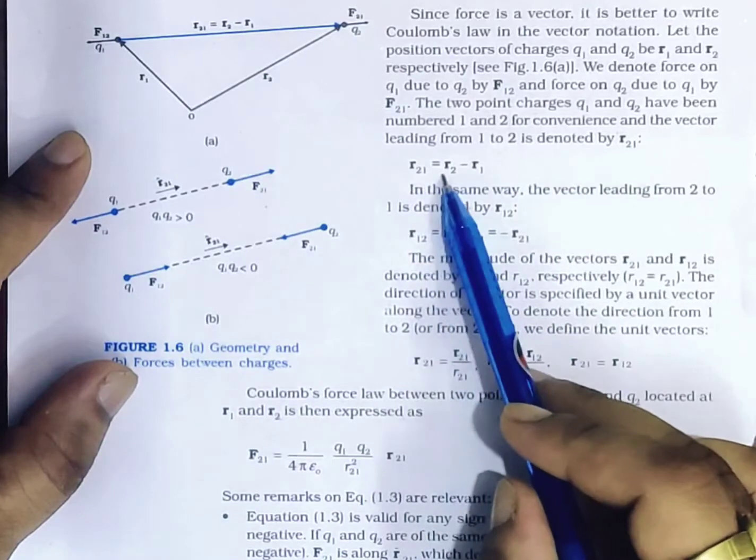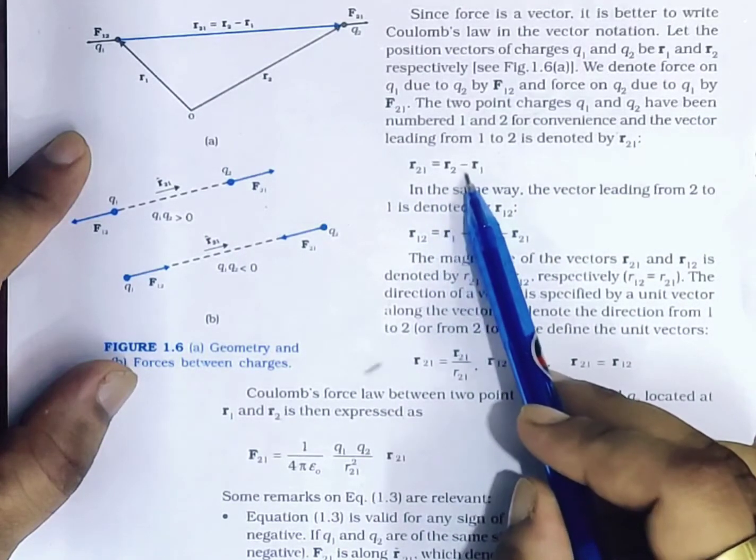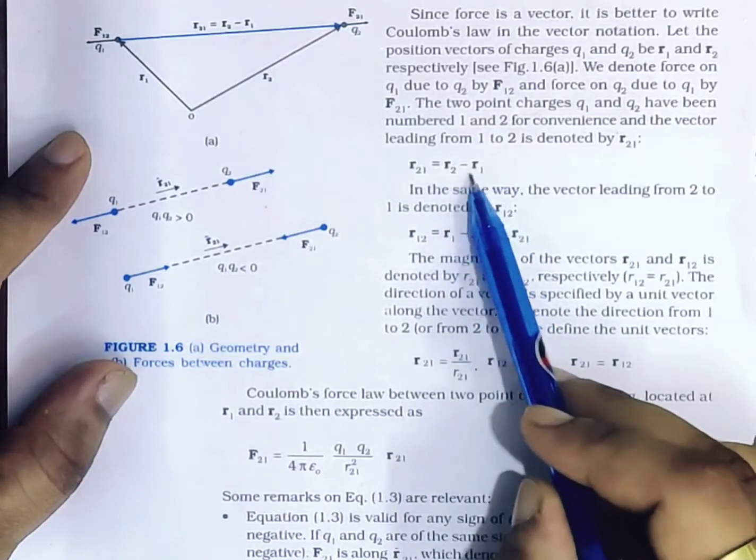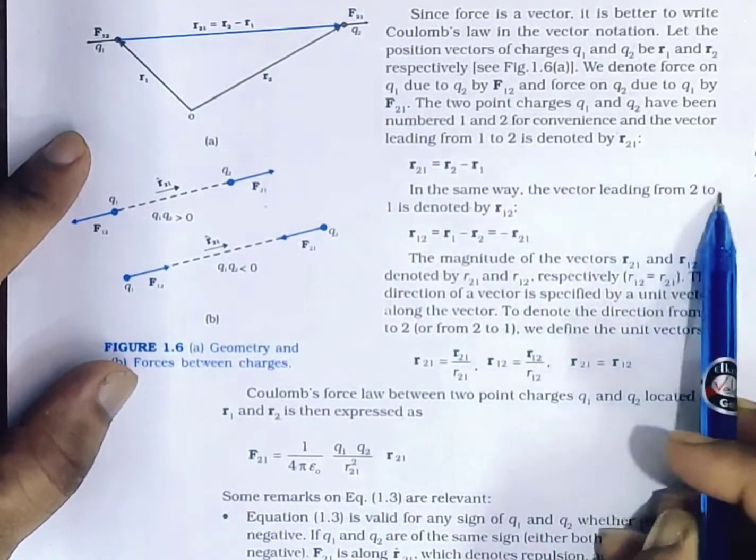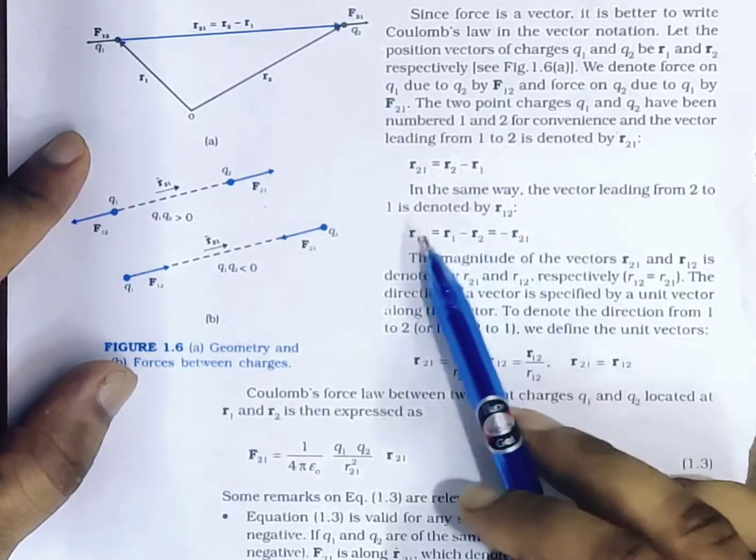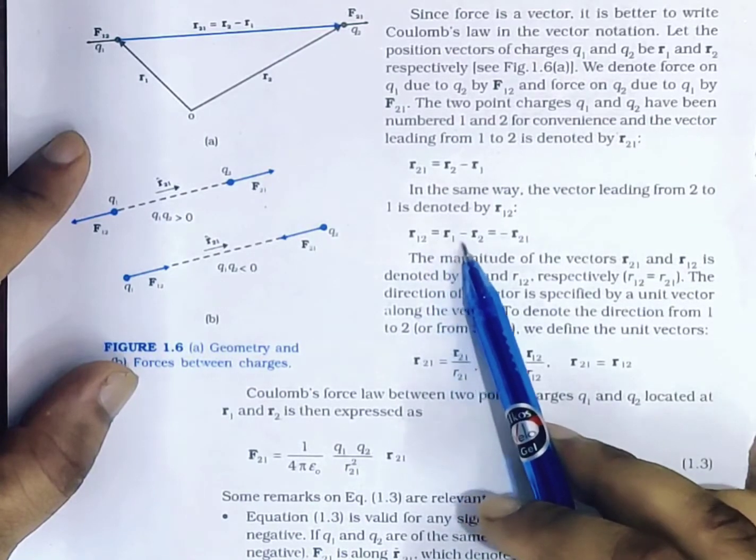Vector R21 equals the subtraction of vector R2 and vector R1, that is R2 minus R1. In the same way, the vector leading from 2 to 1 is denoted by R12, where vector R12 equals vector R1 minus vector R2.